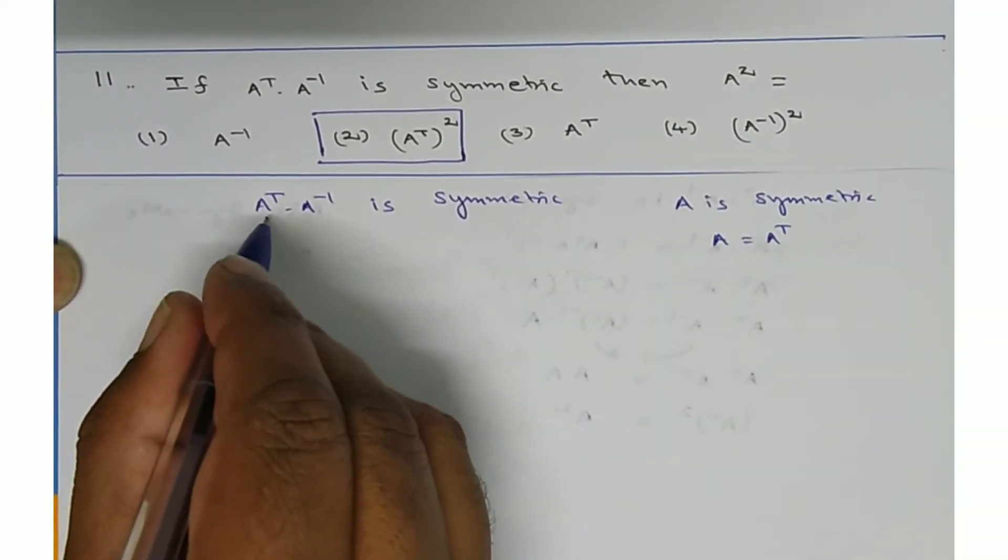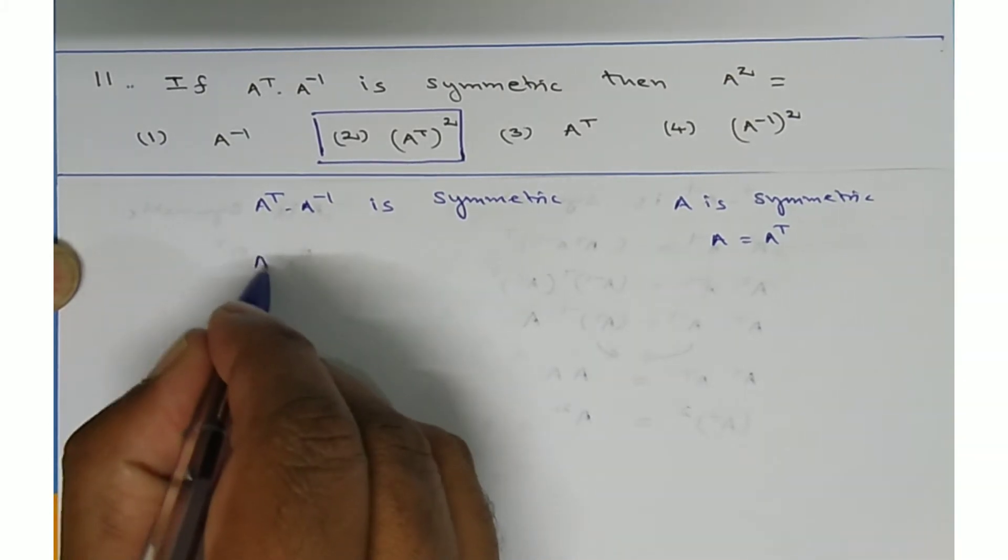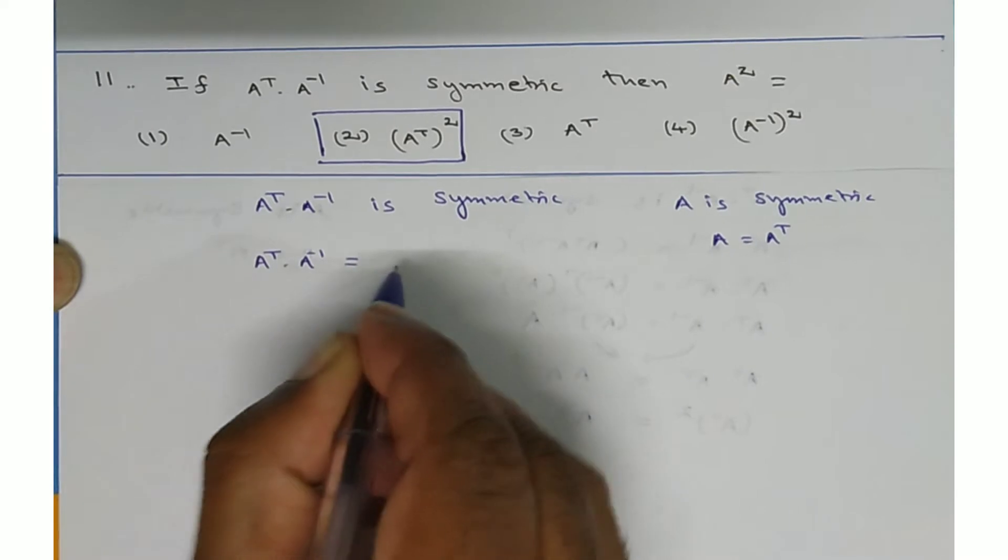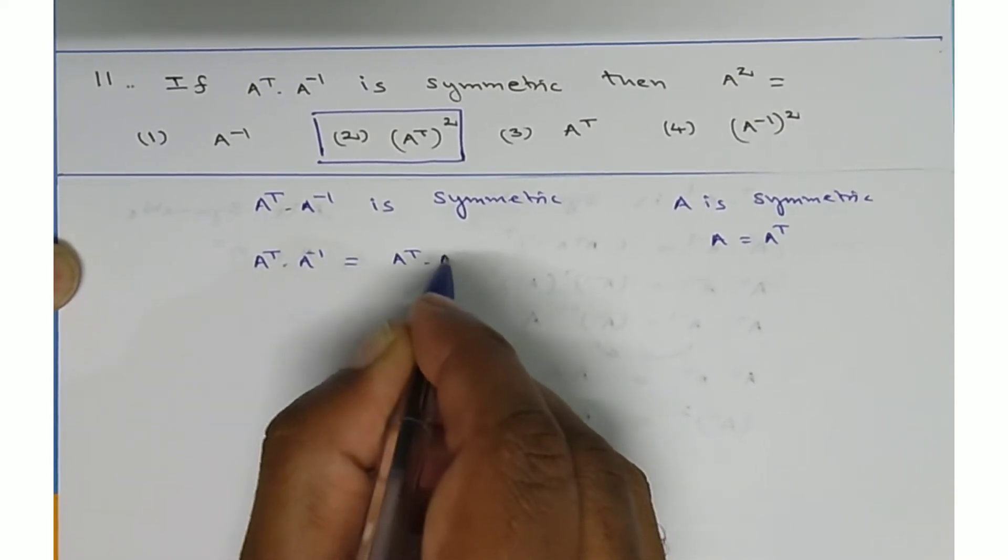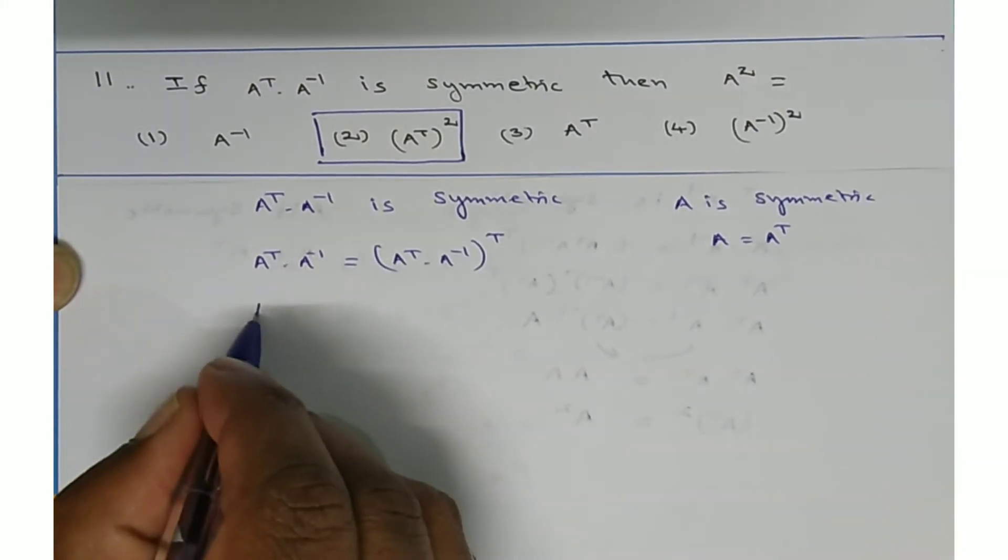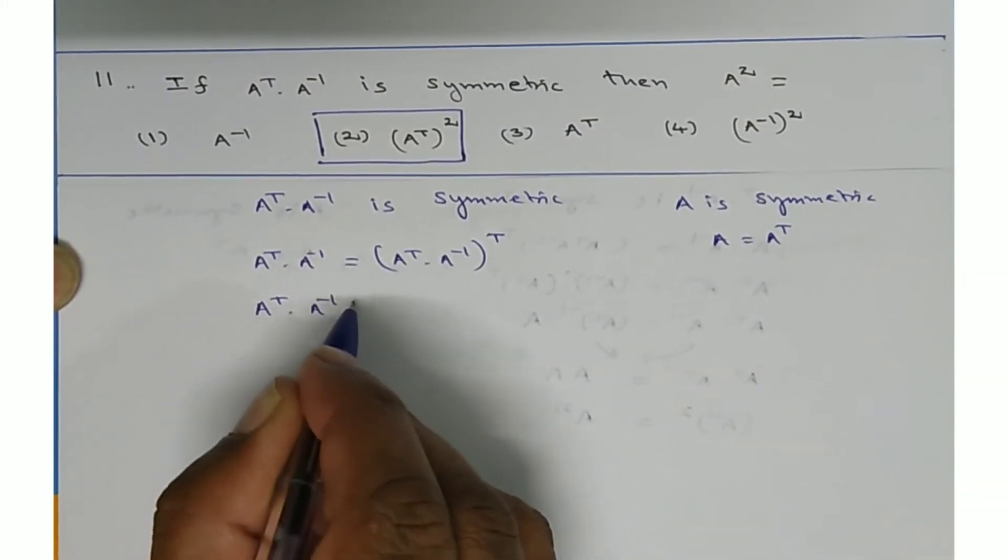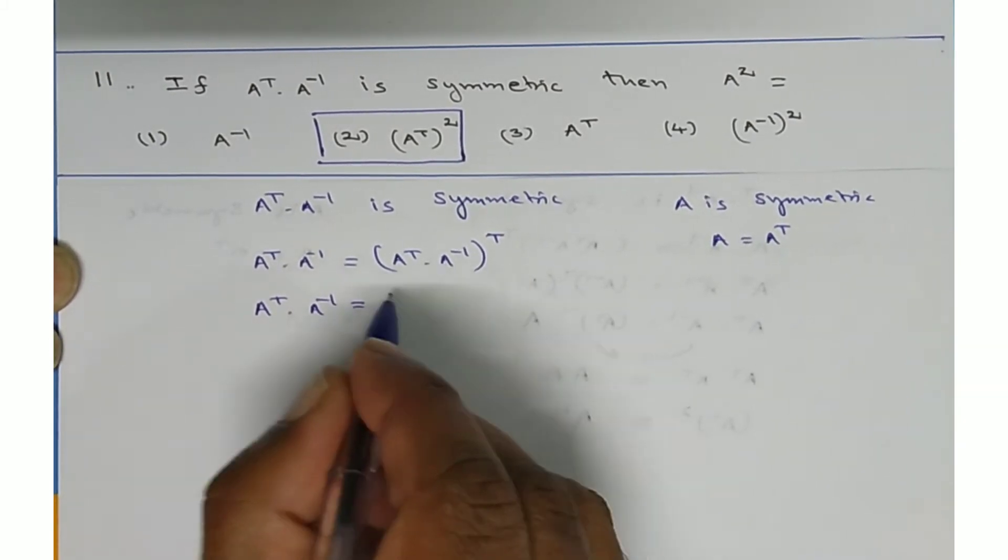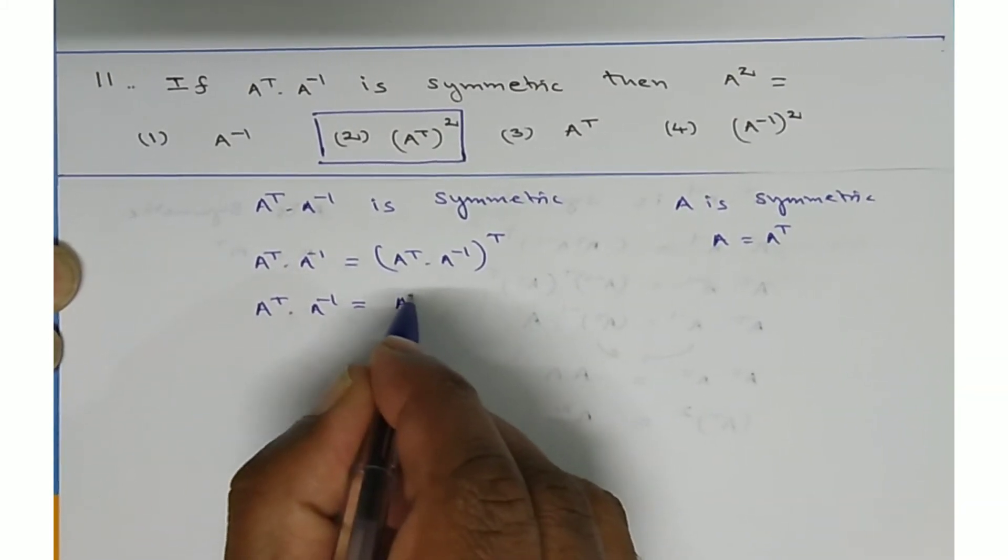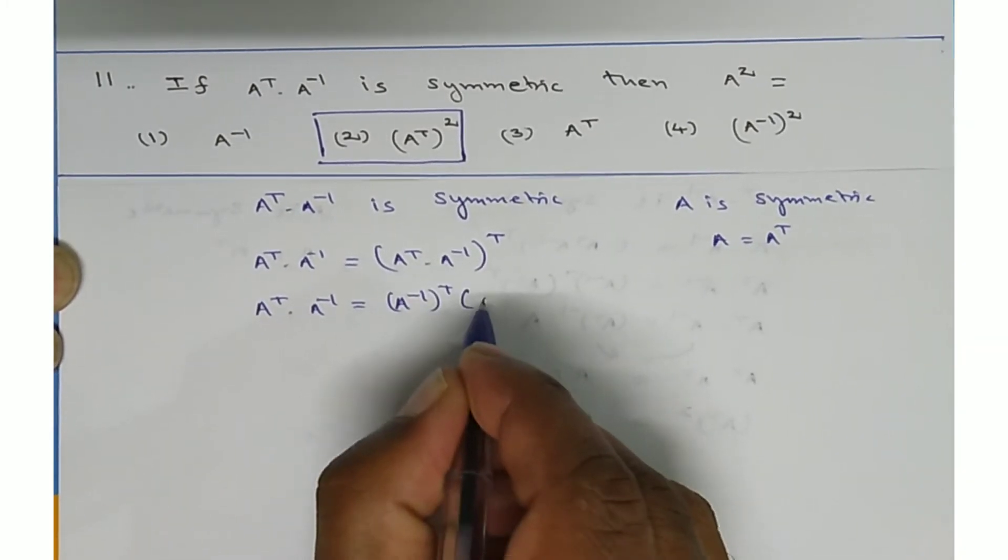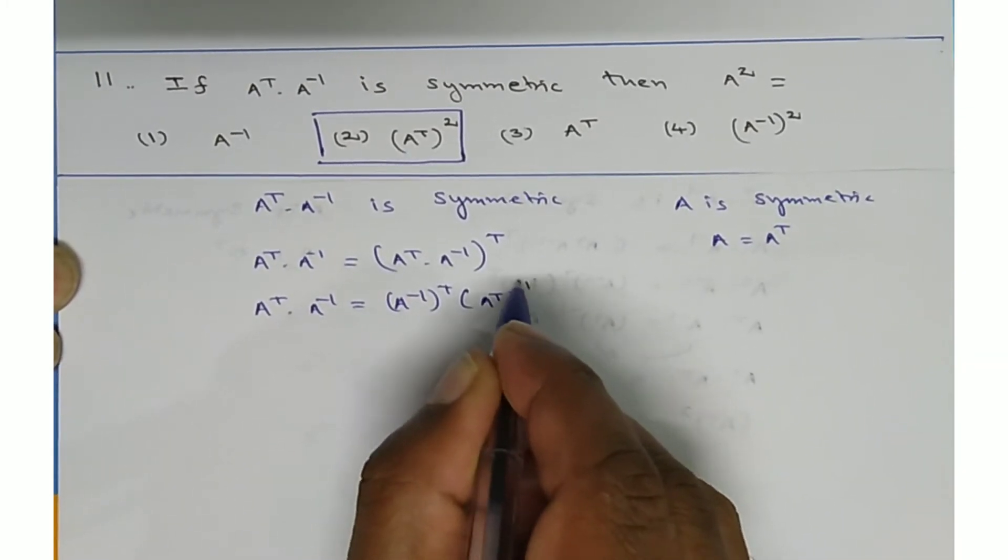Similarly, A transpose A inverse is symmetric, then A transpose A inverse is equal to A transpose into A inverse transpose. A transpose into A inverse is equal to, now we can apply reversal law. Separate it. A inverse transpose, first you should take A inverse into A transpose of transpose.